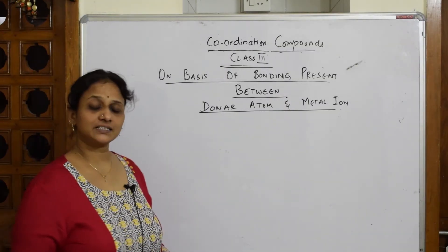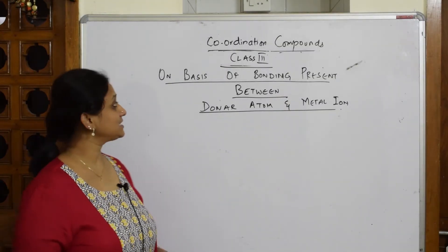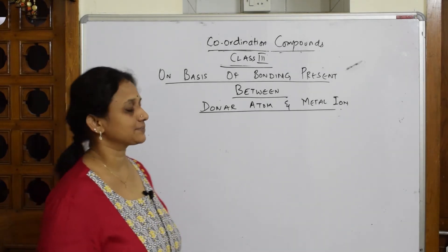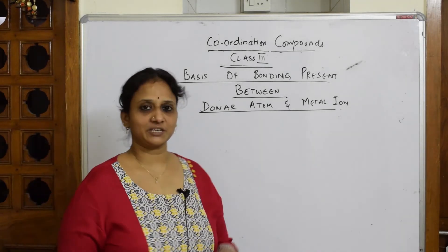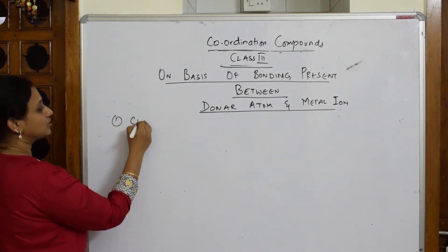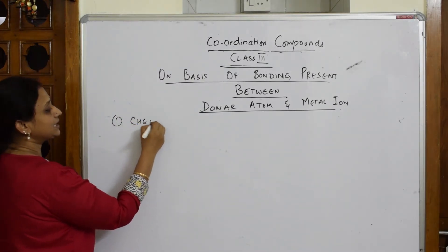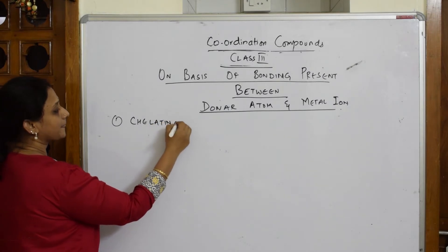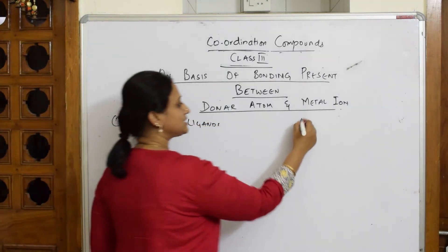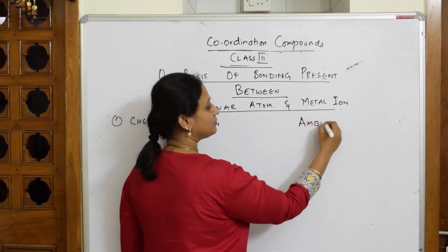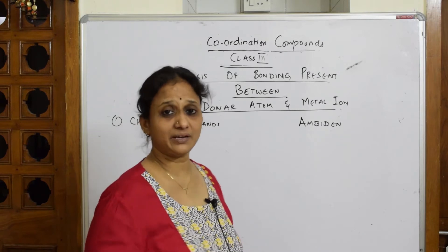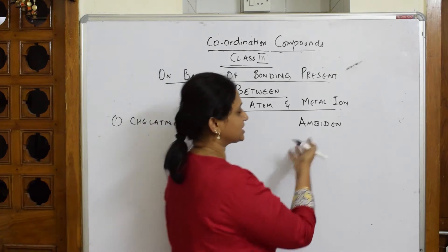Let's come back and see the third category of ligands, which is based on the bonding present between donor atoms and the metal atom or metal ion. The third category of ligands are called chelating ligands, and one more category is ambidentate ligands. A senior student had asked: what is an ambidentate ligand, with an example?